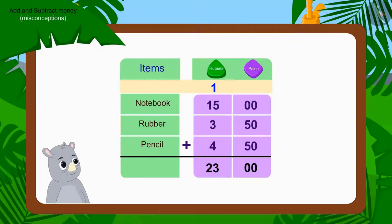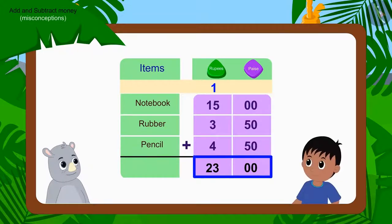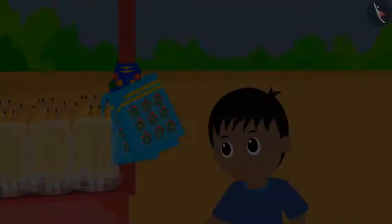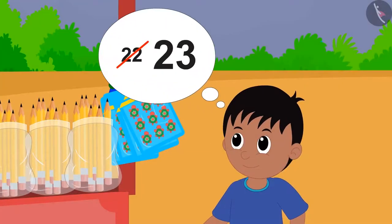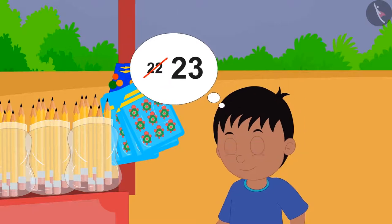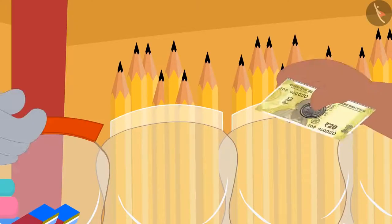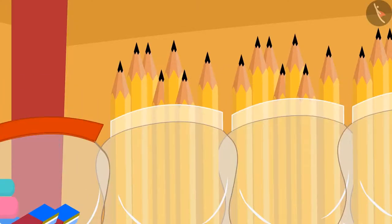Well done kids, you have found the right answer. Raju owes Gaggu 23 rupees for those items. Just like you, Raju too caught Gaggu's mistake and gave him 23 rupees.